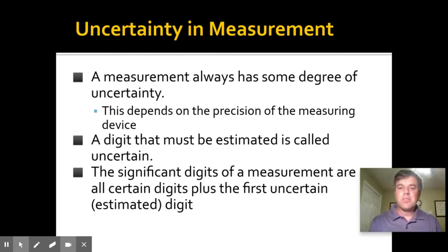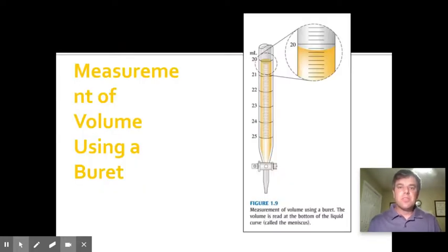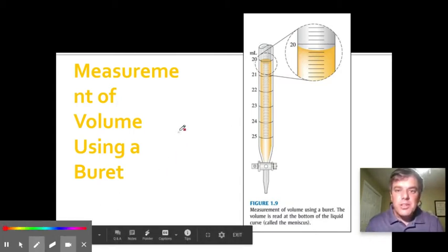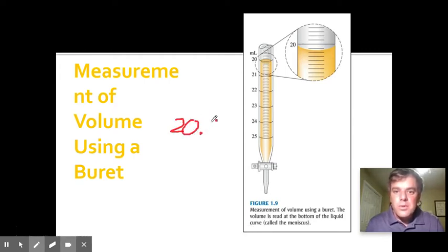If we look at this buret, we'll talk more about how these work. You'll notice that the volume increases as you go down. We have 20, 21, 22, and 23, and there looks like one, two, three, four, five, six, seven, eight—looks like each one of these lines represents a tenth of a milliliter. We're going to read it to the bottom of the meniscus. It looks like it's between 20.1 and 20.2.